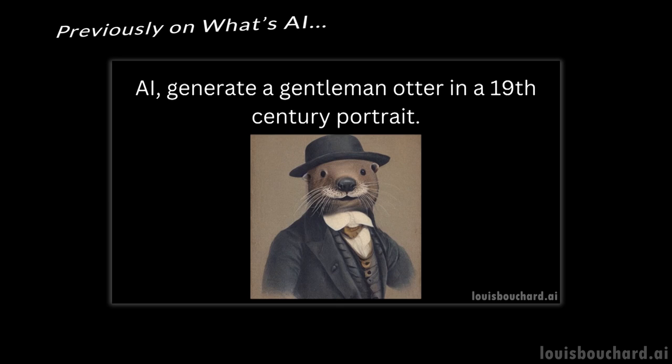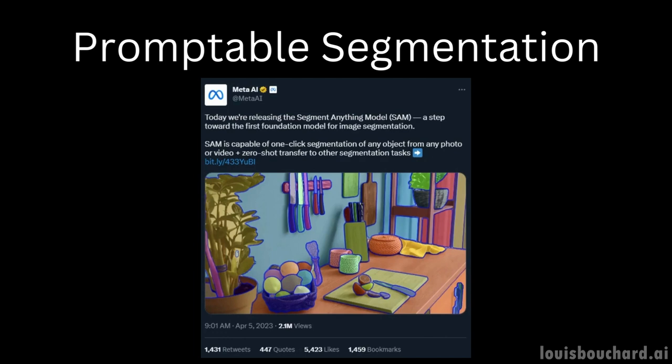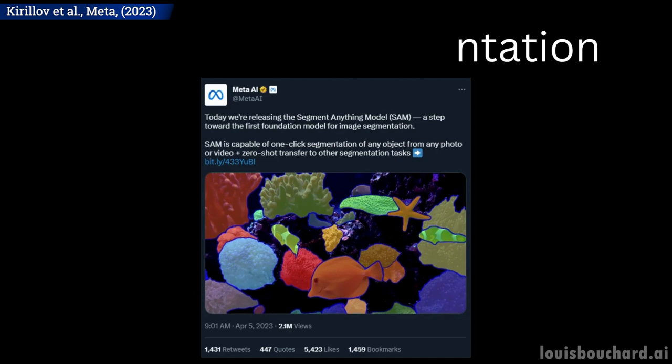We also know that prompting is a new skill for communicating with AIs. What about promptable segmentation? Promptable segmentation is a new task that was just introduced with an amazing new AI model by Meta, SAM. SAM stands for Segment Anything Model, and is able to segment anything following a prompt.